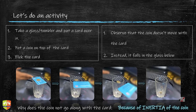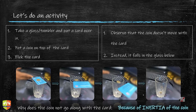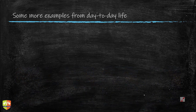Why does the coin not go along with the card? Because of the inertia of the coin — the coin did not want to move from where it was, and hence it tends to stay wherever it was. But now the card has been removed from underneath, so there is no support for the coin, and hence it falls down.